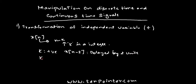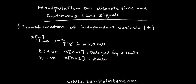On the other hand, if k is negative — for example, k equals minus 2 — then x of n plus 2 will result in an advance of the signal. We refer to this as the signal being advanced, advanced by 2 units of time in this case.